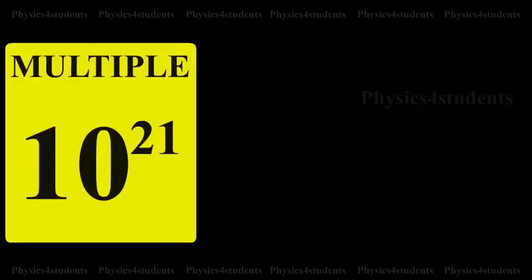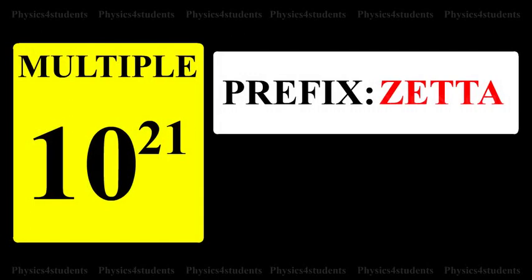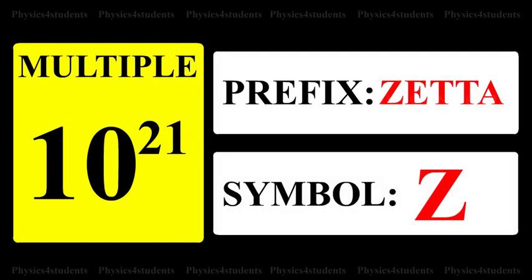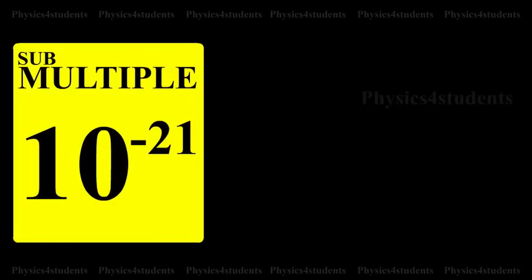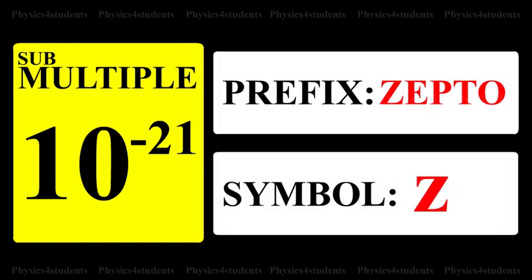10 raised to 21: prefix is Zetta, symbol is Z. Submultiple is 10 raised to minus 21: prefix is Zepto, symbol is Z.